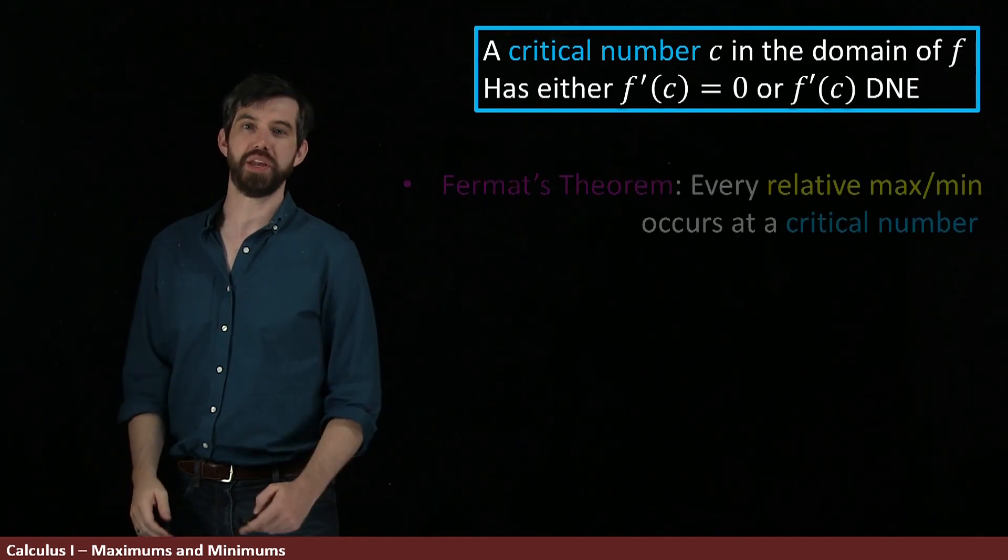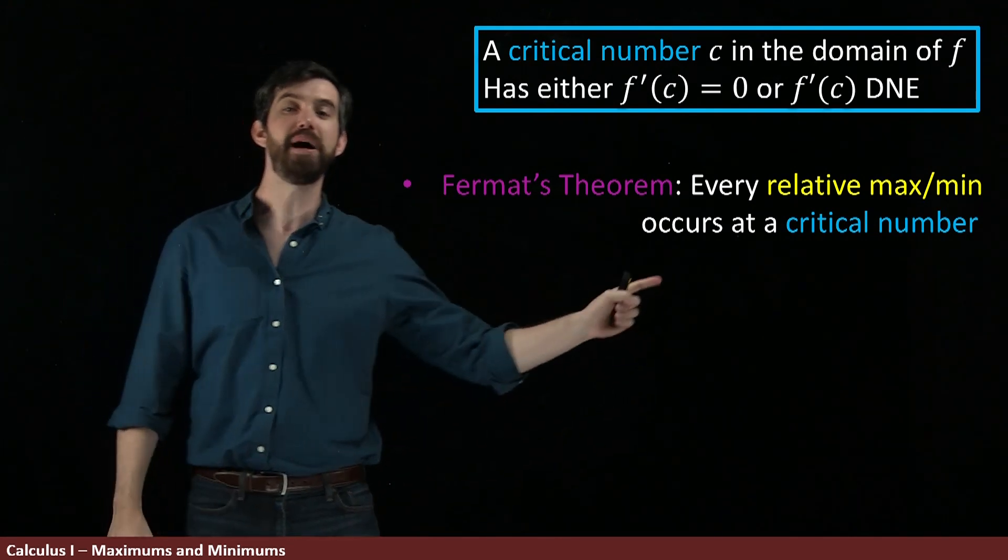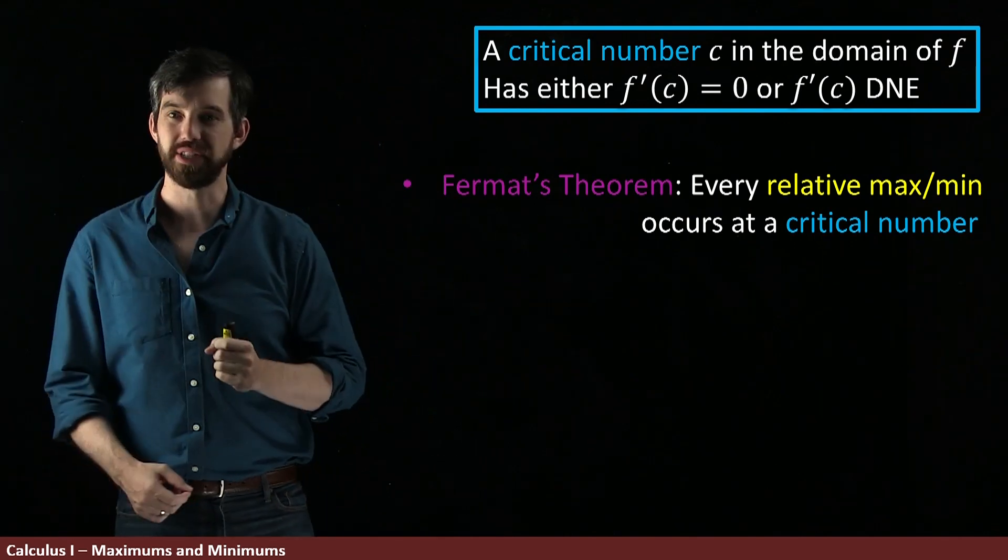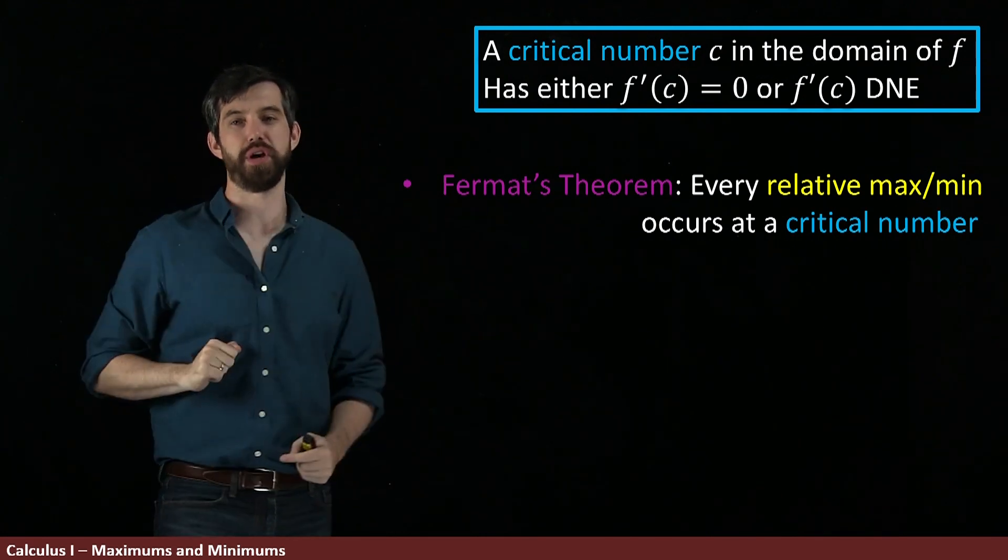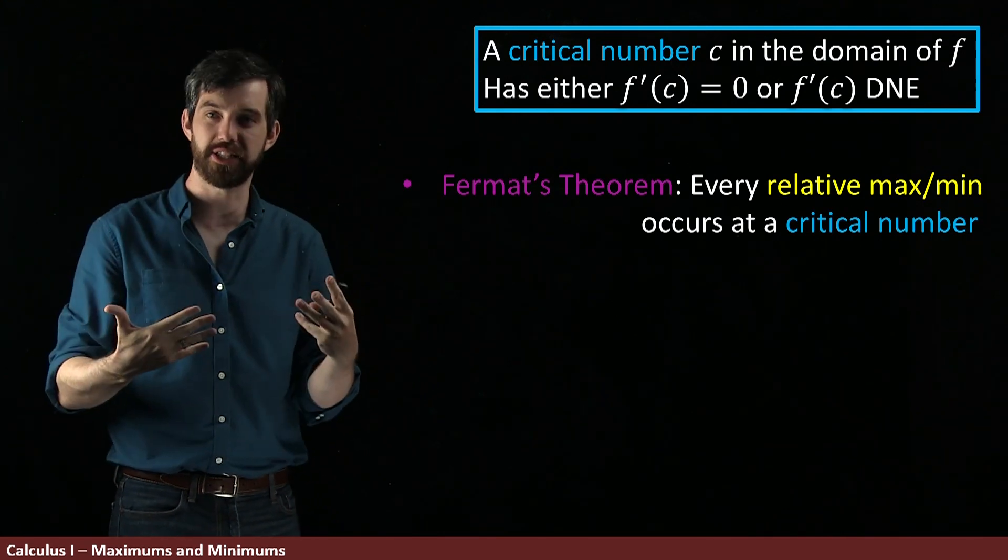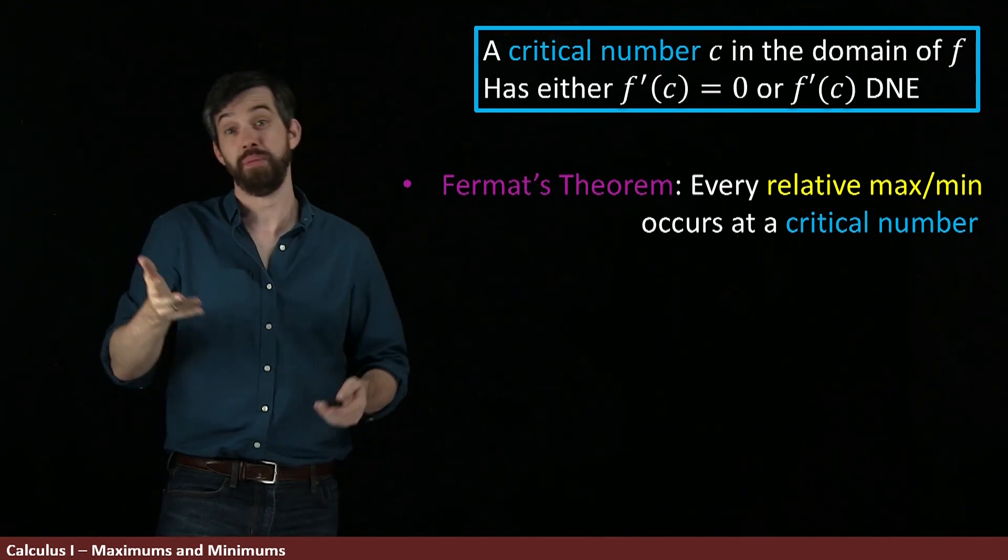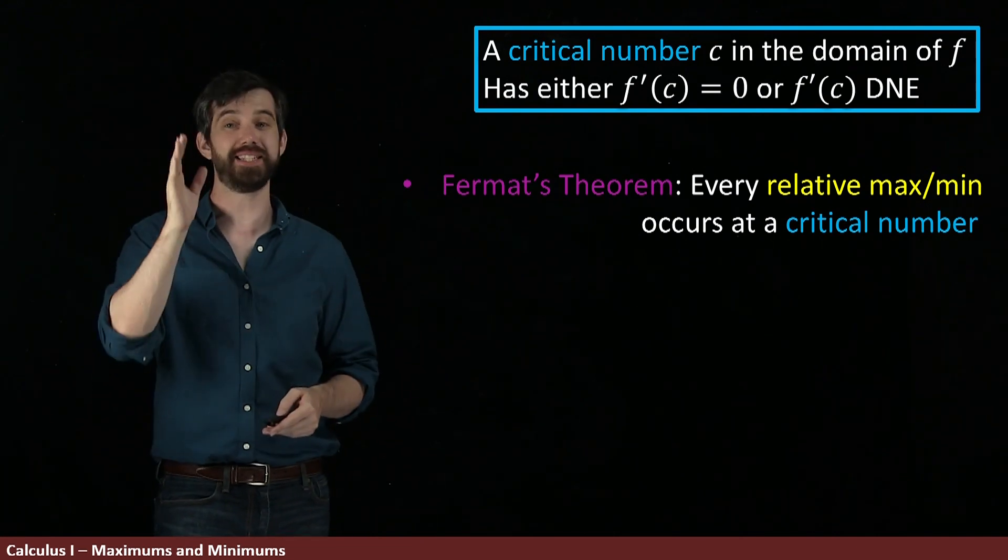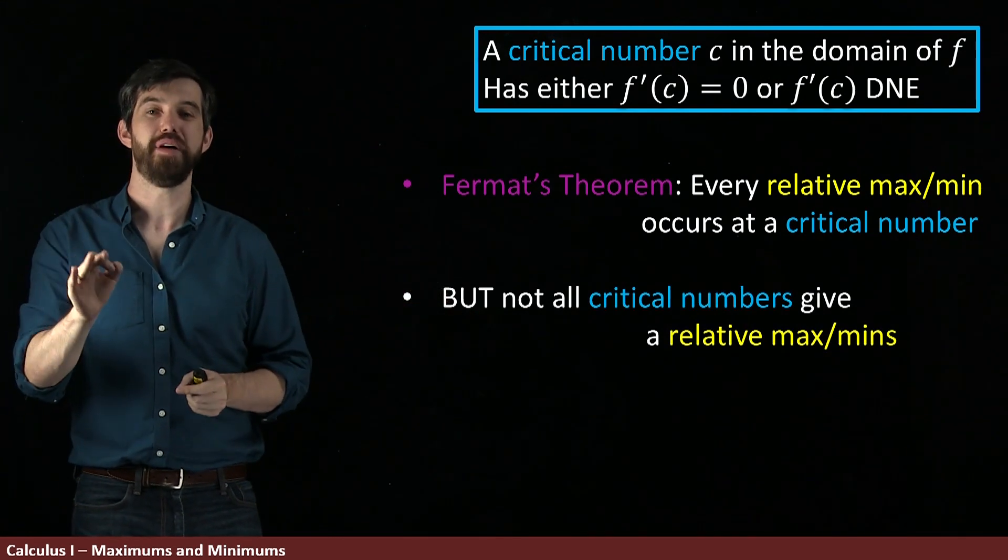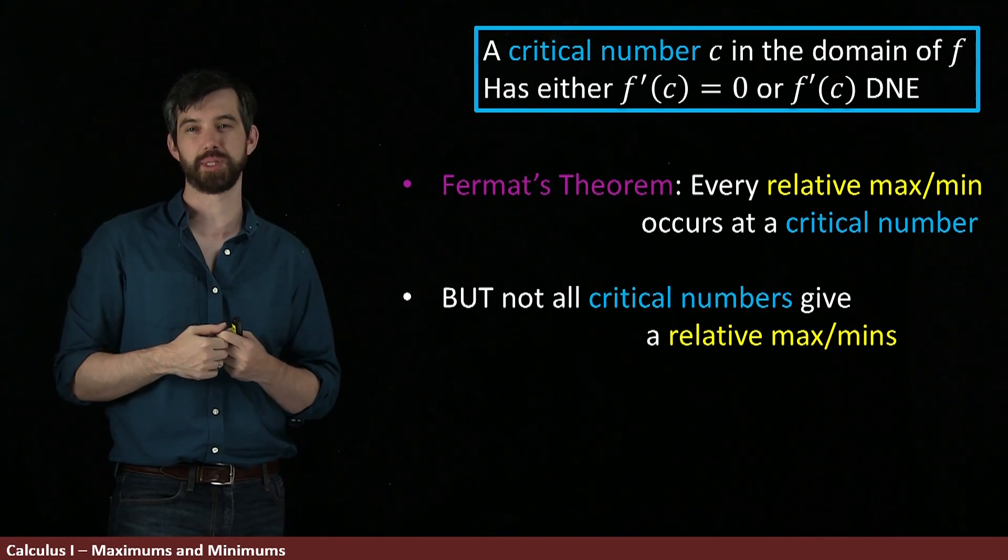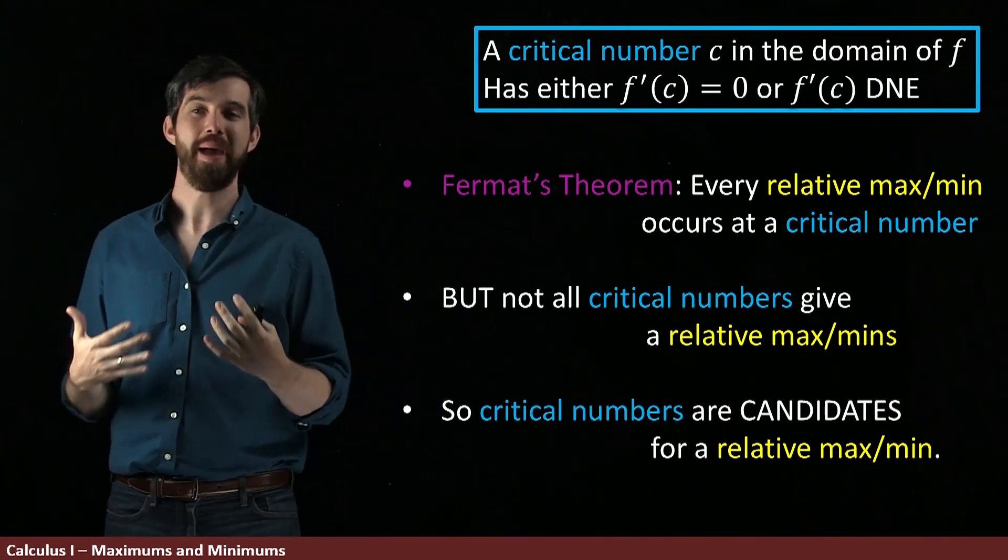And in fact, there is a very important theorem here. It's referred to as Fermat's theorem. And it says that every single one of those relative maximums and minimums, it must occur at a critical number. In other words, if you don't have a critical number, you don't have a maximum or a minimum. So what we know is that we're supposed to look for these critical numbers. All of these critical numbers are candidates to be maximums or minimums. However, we know that just because it has a derivative equal to zero and come up with an example, just because this derivative does not exist doesn't mean it's a maximum or a minimum. In other words, not all critical numbers are going to give a maximum or minimum. Only some of the critical numbers are going to give maximums or minimums.